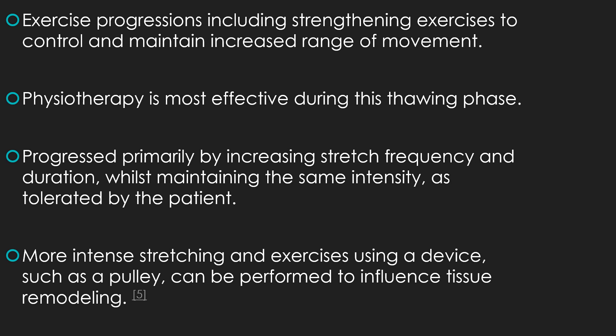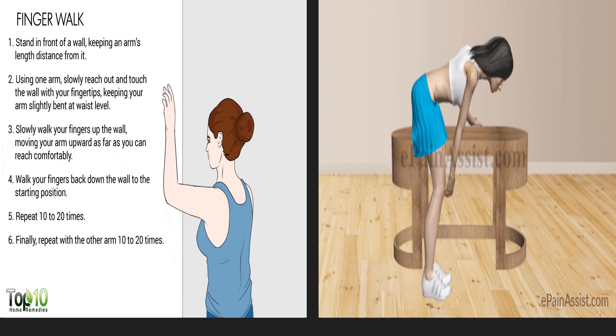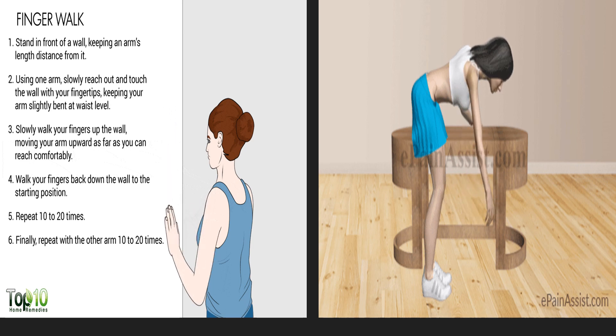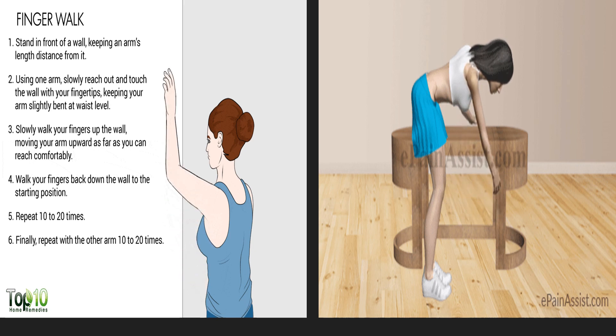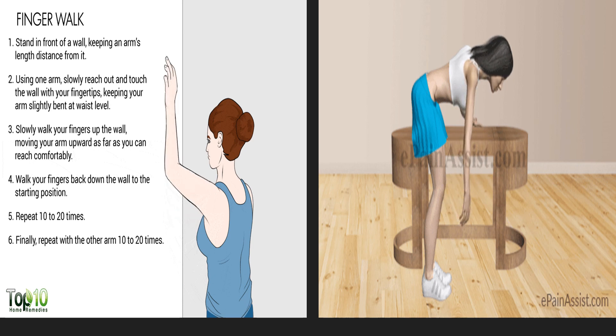Here are a few exercises to demonstrate. Physiotherapy is most effective during the thawing phase — the third stage. These include the shoulder wheel exercise, finger ladder exercise, pulley exercise, and mobilization exercises. All the exercises shown are assisted. These can also be given in stage two of rehab, but we must ensure the patient is not strained. The pendulum exercise uses gravity assistance so the load on the shoulder joint does not increase.